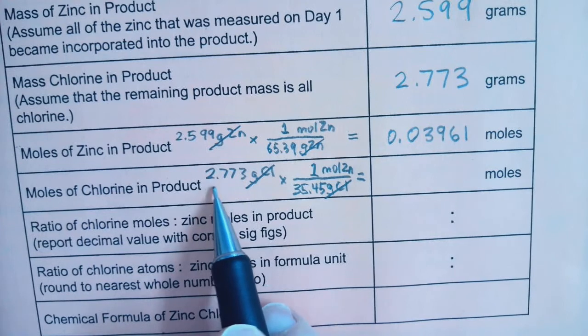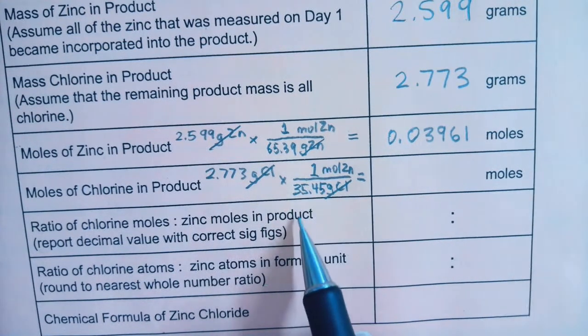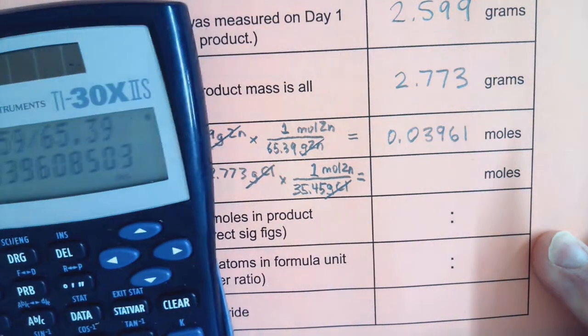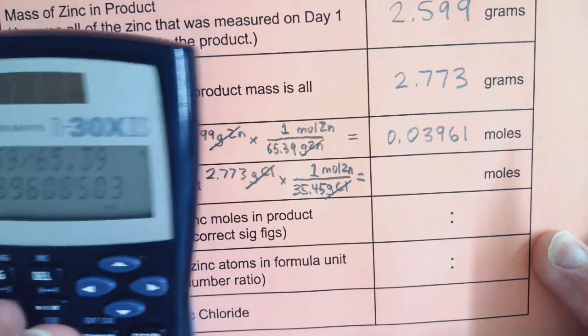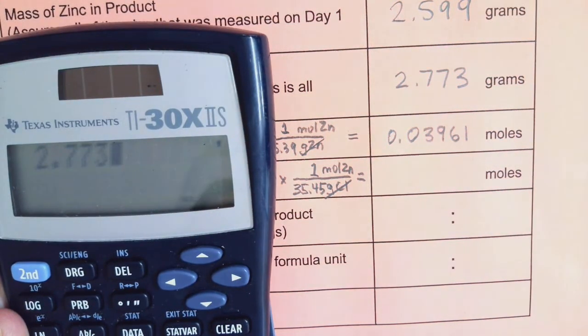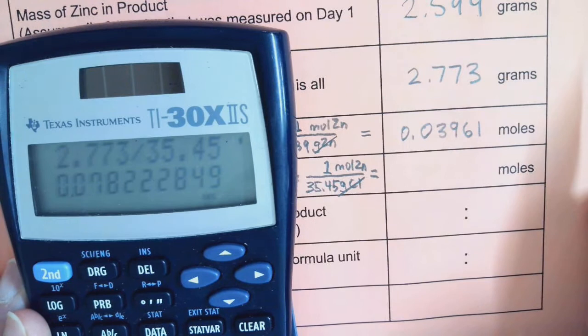So grams will cancel. My math is to take 2.773. Yes, I can multiply it by one, but I'm really taking 2.773 divided by 35.45. Let's do that.